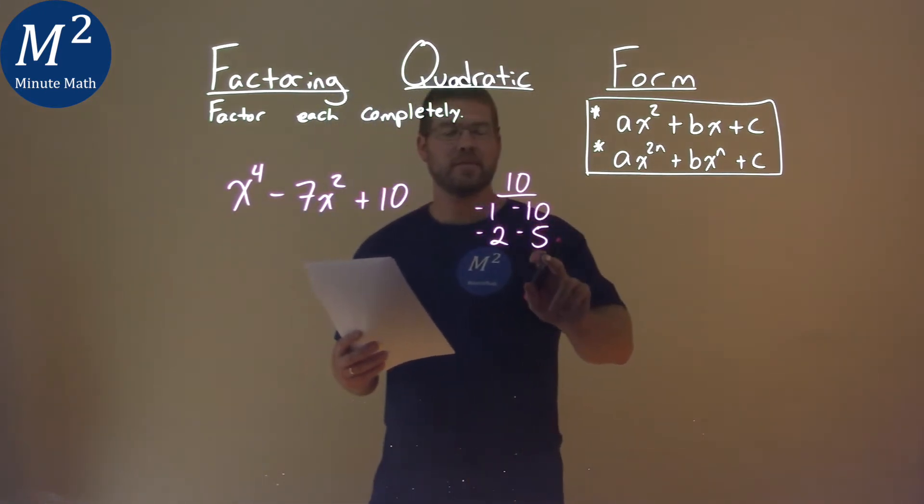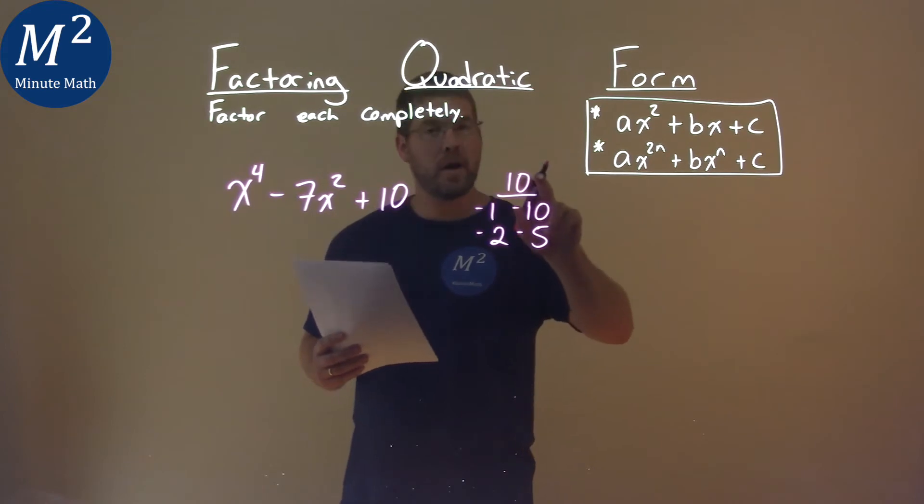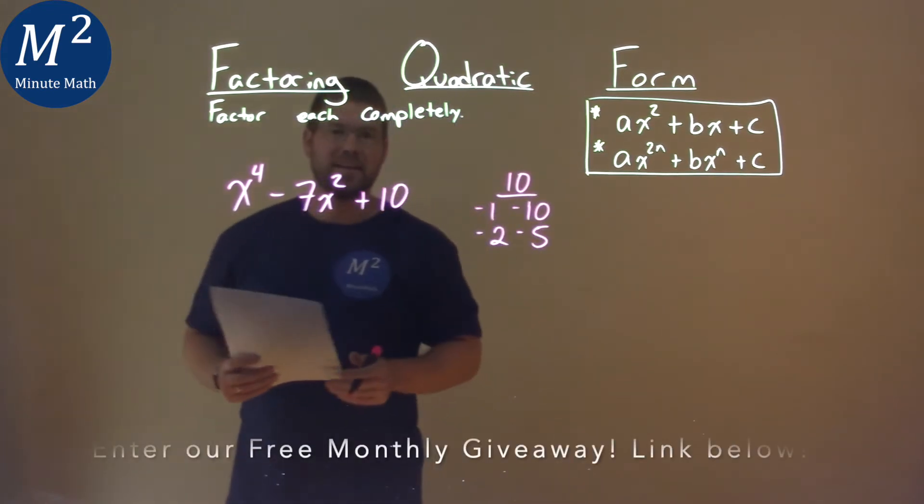Both these numbers will have to be negative. So both negative, they multiply to get positive 10, but add to be a negative b value.